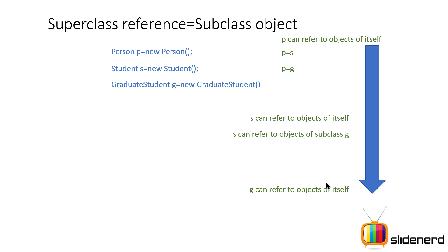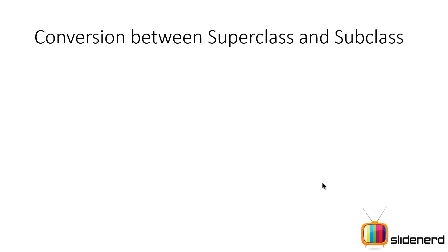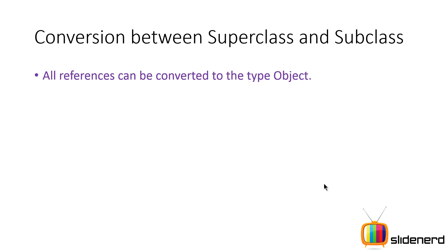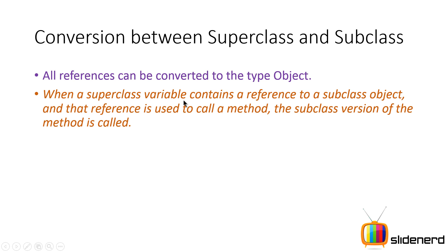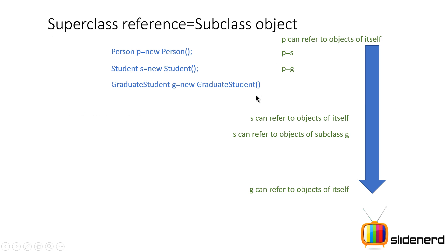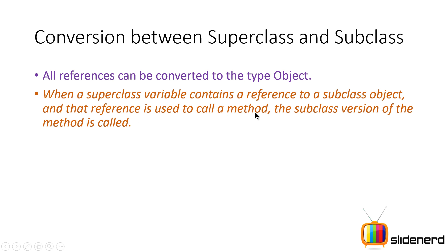Now the first question is: why would we need this? Remember, Object is the superclass of everything in Java, so all references can be converted to type Object. Also remember: when a superclass variable contains a reference to a subclass object — for example, Person p = new Student() — and you call a method like p.getInfo(), the subclass version of the method is called. This property is called dynamic method dispatch, which we'll cover specifically in the next video.